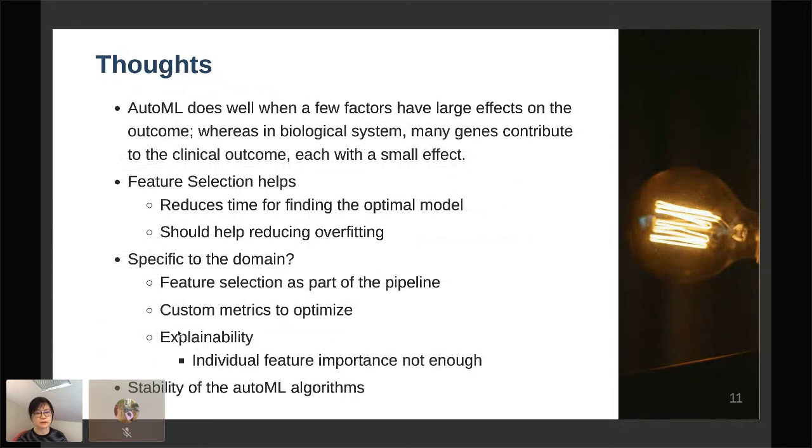I think that feature selection does help to at least reduce the time for finding the optimal model and it should also help in reducing overfitting, although we still see overfitting in my little experiment.